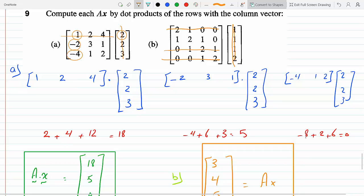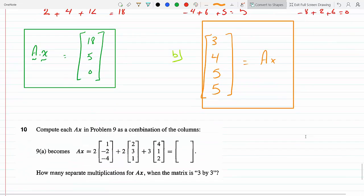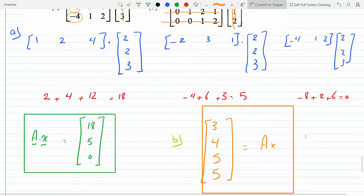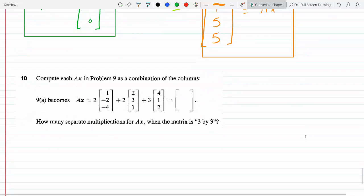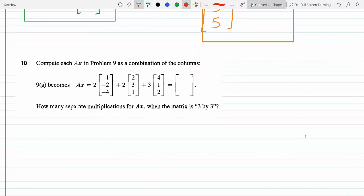So I'm doing two times that column, which is 2, 1, minus 2, 4. So this of course would be 2, minus 4, you multiply 2 by each one, and then minus 8.